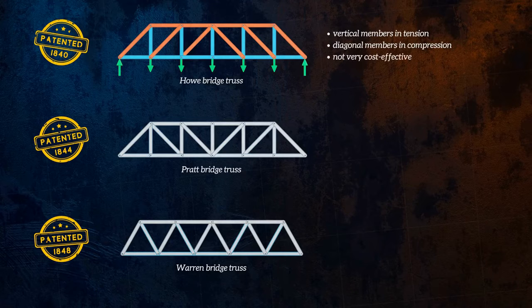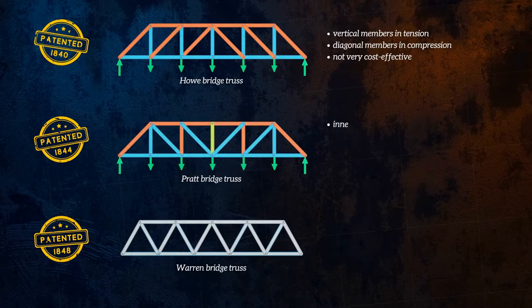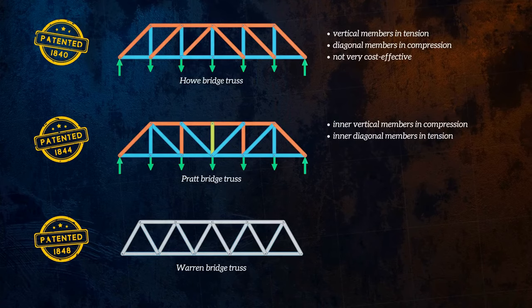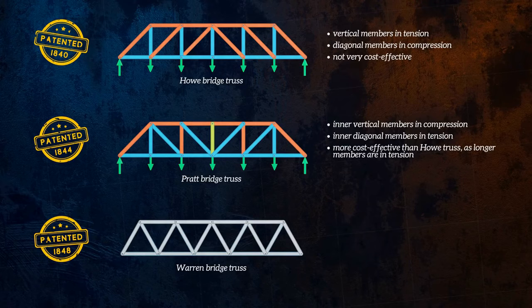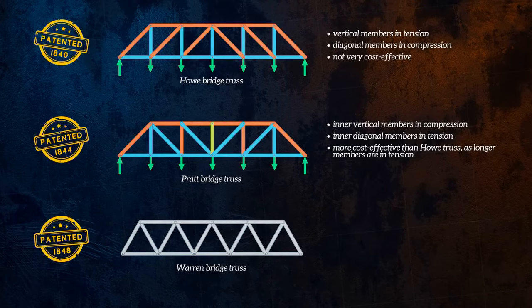The Pratt truss addresses this issue. Its vertical members are mostly in compression, and its inner diagonal members are in tension. This is more cost effective than the Howe truss, since the longer diagonal members can be thinner. Longer members are also more susceptible to buckling under compressive loading than shorter ones. So it's a good idea for long members to be in tension.